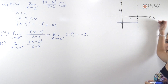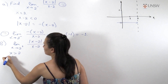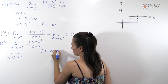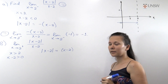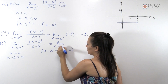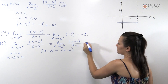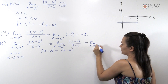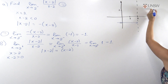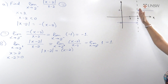When approaching from the right, x is strictly larger than 2, and therefore x-2 is strictly larger than 0. This means the absolute value of x-2 is now equal to x-2 itself. Substituting this, we have the limit as x goes to 2 from the right of (x-2) over (x-2), which equals the limit of 1, which is 1. On the graph we have the straight line equal to 1 going up to 2 from the right.